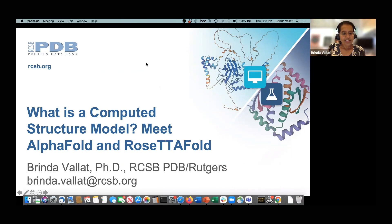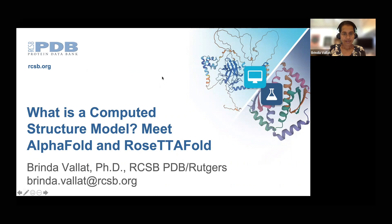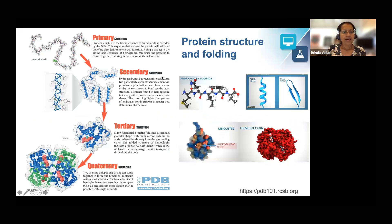I'm happy to give the introductory talk at this virtual crash course on exploring computer structure models at rcsb.org. Proteins are macromolecules made up of amino acids that determine their 3D shape. These amino acids interact locally and in long range to form secondary structures and folded tertiary structures. The folded proteins can also interact with one another to form quaternary associations that enable function.